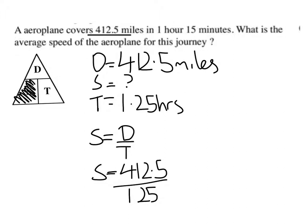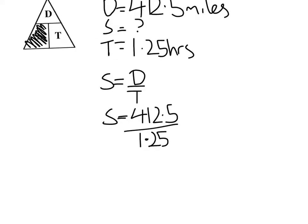And then put that into our calculator to work out what that is. So I've just put that in my calculator. Give myself a bit more room. And the answer is 330. Now, as we're doing miles an hour, it's in miles an hour. So 330 miles per hour.